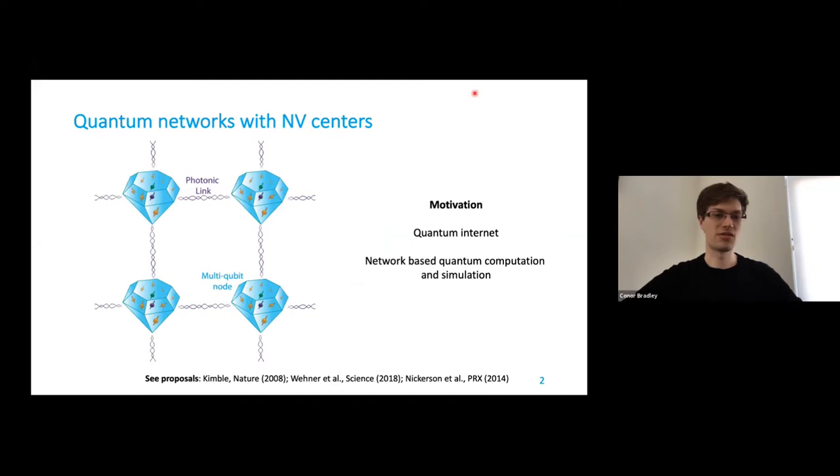In Tim's group and at QuTech in general, we are working towards realizing quantum networks based upon NV centers in diamond. And ultimately we envisage an architecture that looks something like this, where we have these multi-qubit nodes based on diamond chips that can be photonically linked together to realize remote entanglement. And the idea here is ultimately to realize quantum internet, but also to have the capabilities in these nodes to realize network-based quantum computation and simulation.